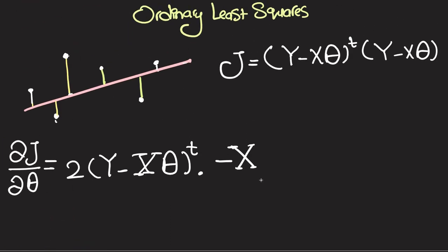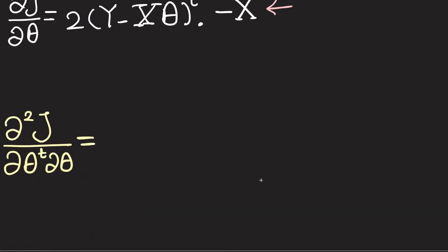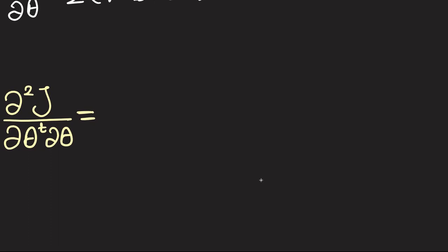In the previous video we were able to find the first partial derivative of J with respect to theta. What we're going to do in this one is try to find the second partial derivative, ∂²J/∂θ^T∂θ.